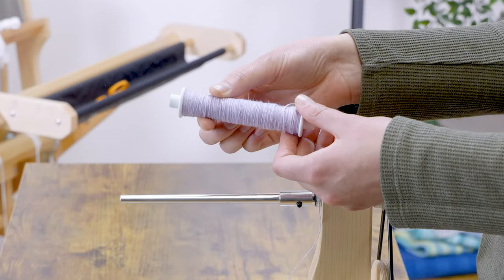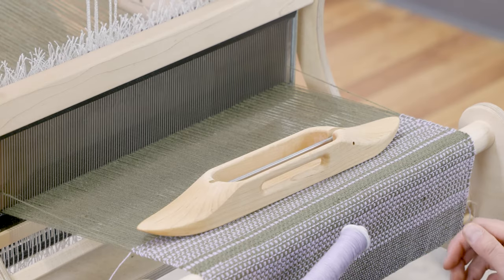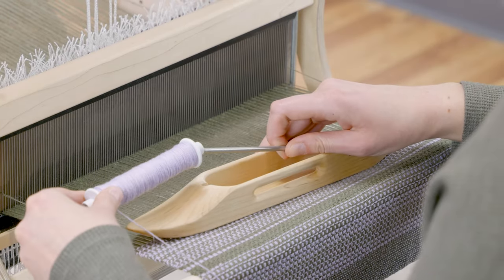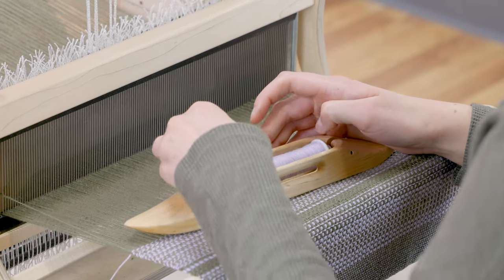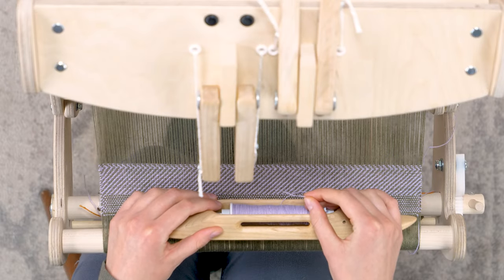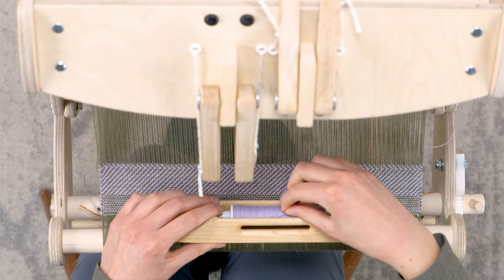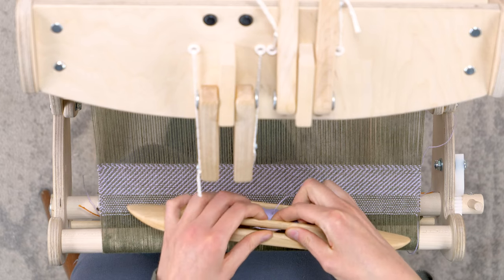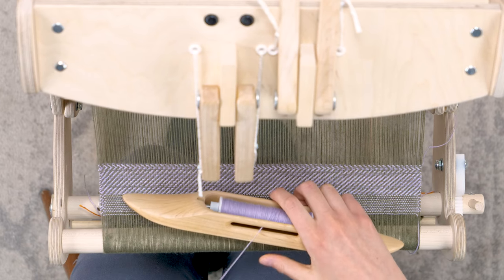What I'll do is take my wound bobbin and put it on the shuttle. Lift up this metal part in the middle, slide the bobbin on and then lower that back down. Then take the cut end and place it through that hole in the side. This helps the yarn wind off cleanly and smoothly.